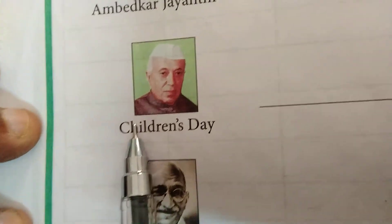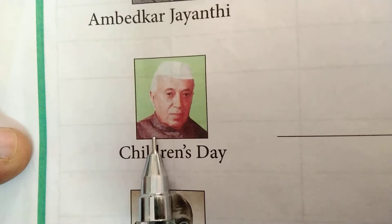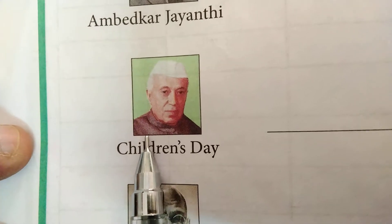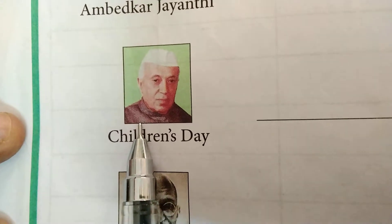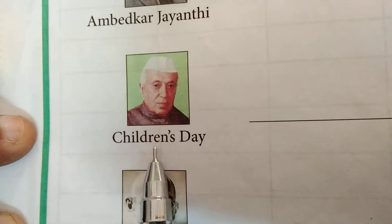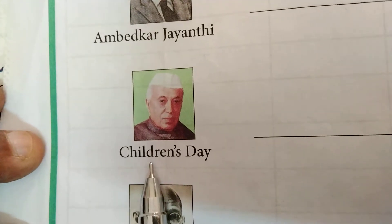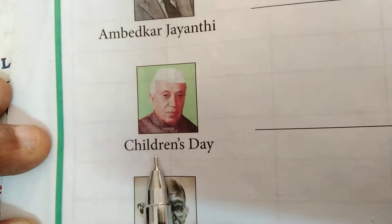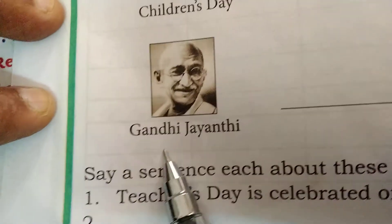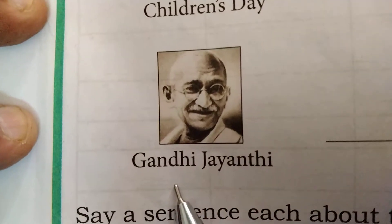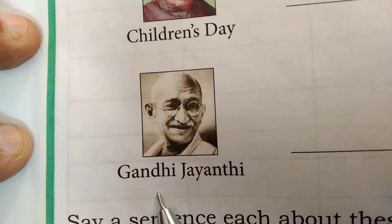And then this one — who's this? I know you know this picture, you will identify. Jawaharlal Nehru. So, Children's Day. We are all fond of Children's Day — 14th November. And this one? Gandhi Jayanti — 2nd October.